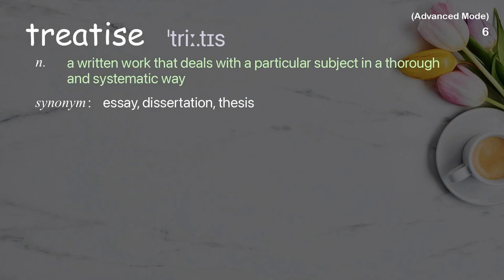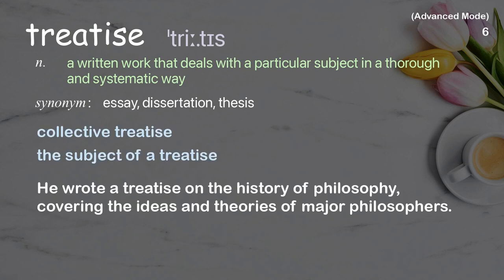Treatise: A written work that deals with a particular subject in a thorough and systematic way. Examples: collective treatise, the subject of a treatise. He wrote a treatise on the history of philosophy, covering the ideas and theories of major philosophers.